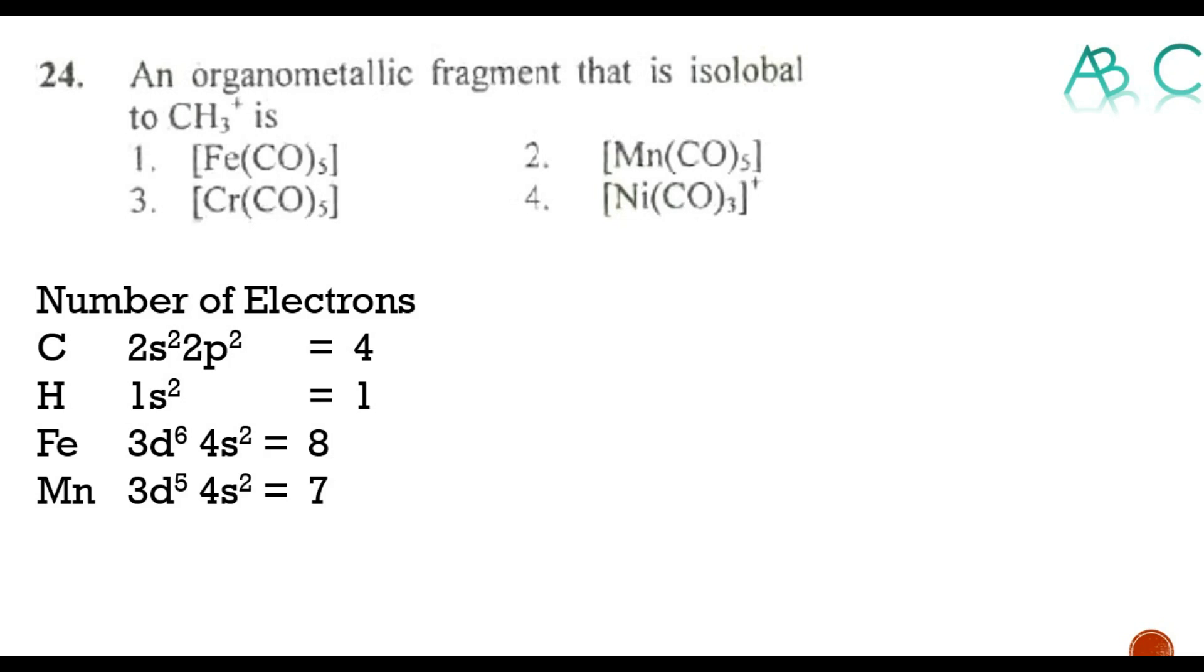For Fe 3d6 4s2 so it has 8 electrons. For Mn 3d5 4s2 so 7 electrons. For chromium 3d5 4s1 so 6 electrons. And nickel 3d8 4s2 so 10 electrons. For CO, each carbon monoxide contributes 2 electrons.